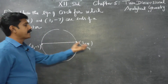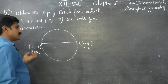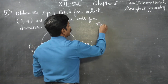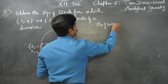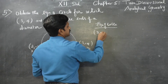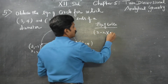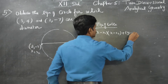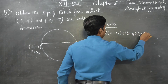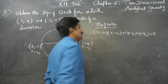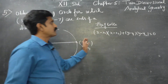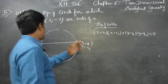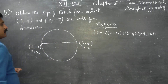The second method uses a ready-made formula. When the extremities of a diameter are given, the equation of the circle is: (x − x1)(x − x2) + (y − y1)(y − y2) = 0.